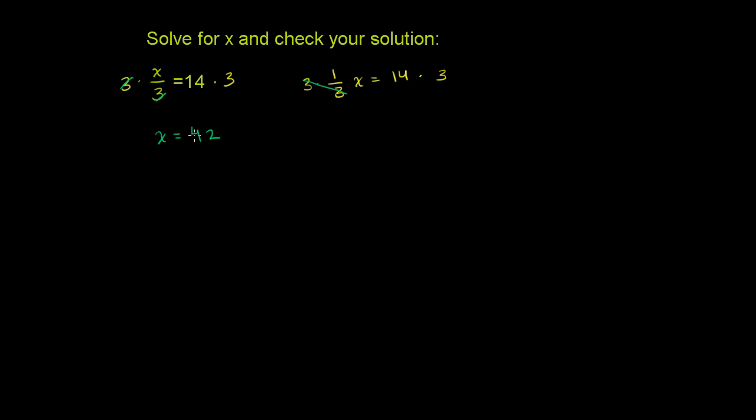Now let's just check our answer. Let's substitute 42 into our original equation. So we have 42 in place for x over 3 is equal to 14. So what's 42 divided by 3? And we could do a little bit of medium-long division. It's not really long division.